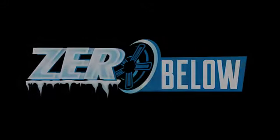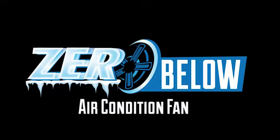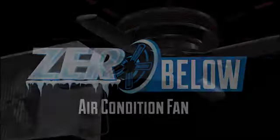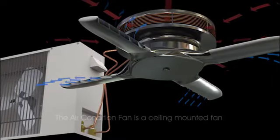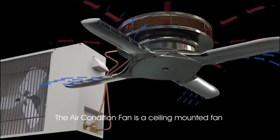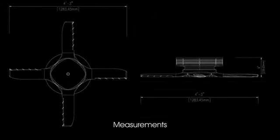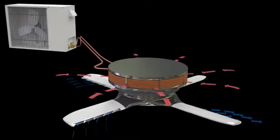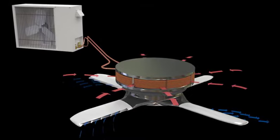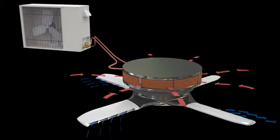Presenting the Zero Below AC fan, another world-changing innovation from inventor Peter Charles Whittington. The fan is a cross between a conventional ceiling mounted fan and a mini split air conditioning unit. The fan can be manufactured in either three or four blade designs.